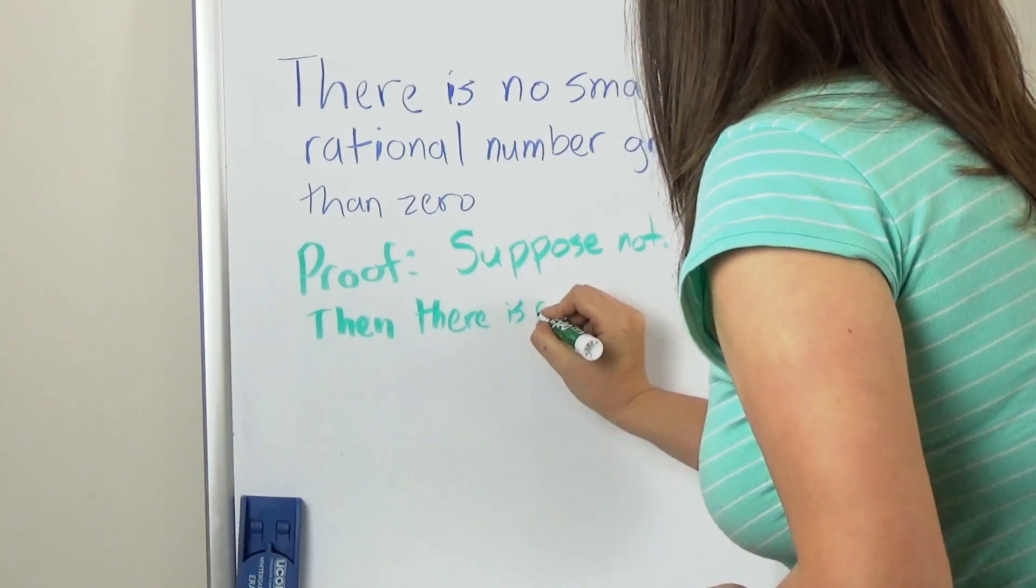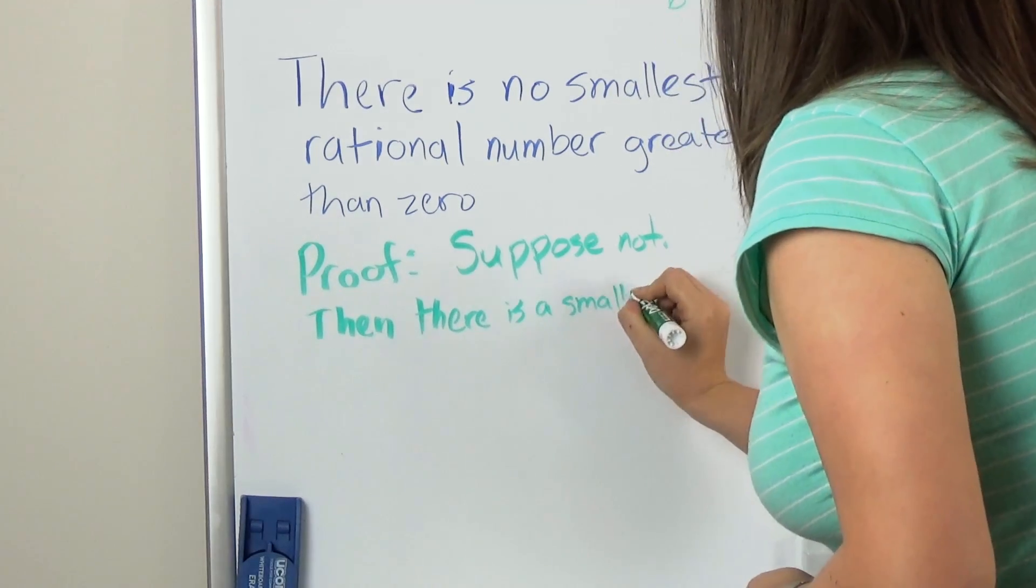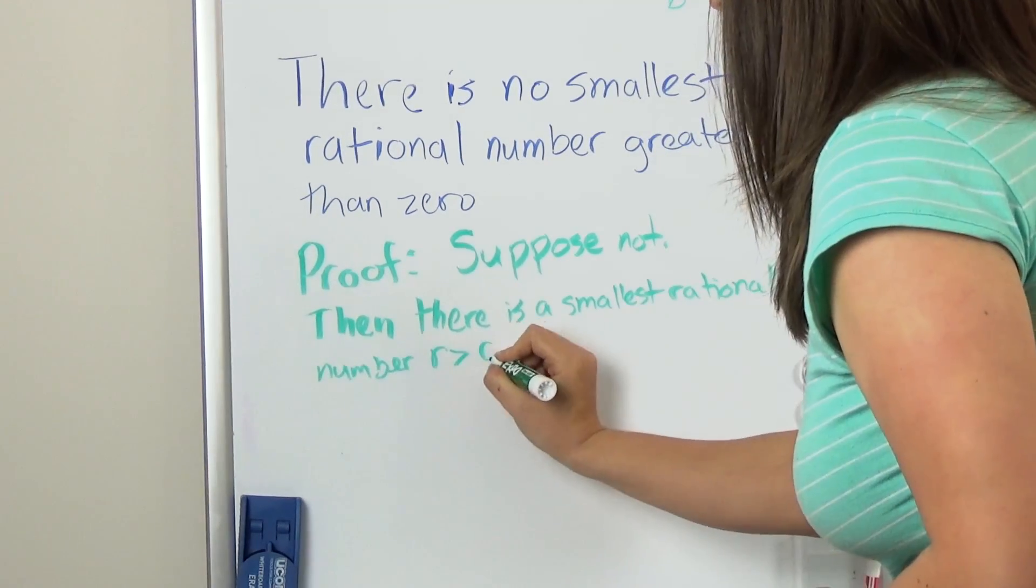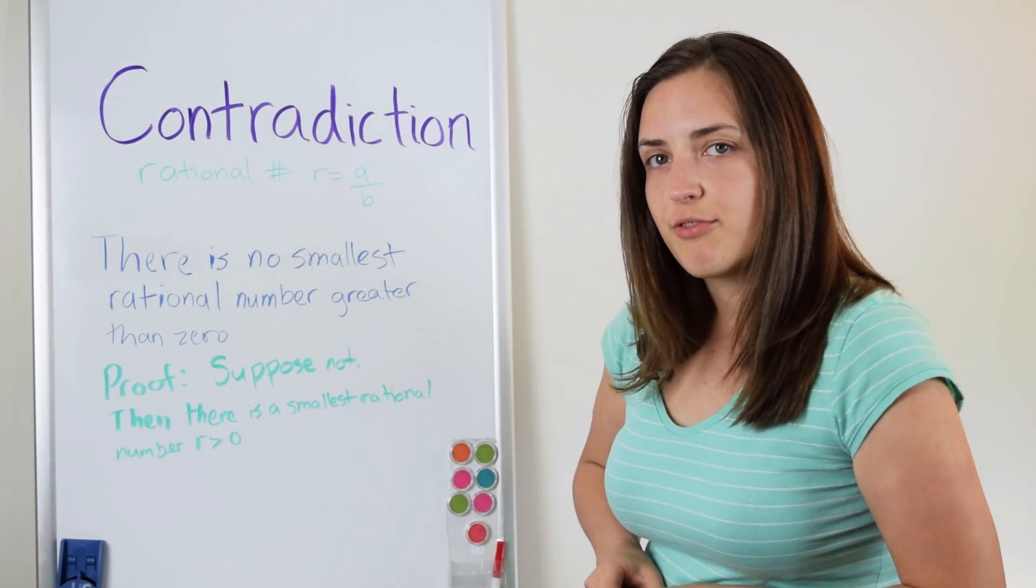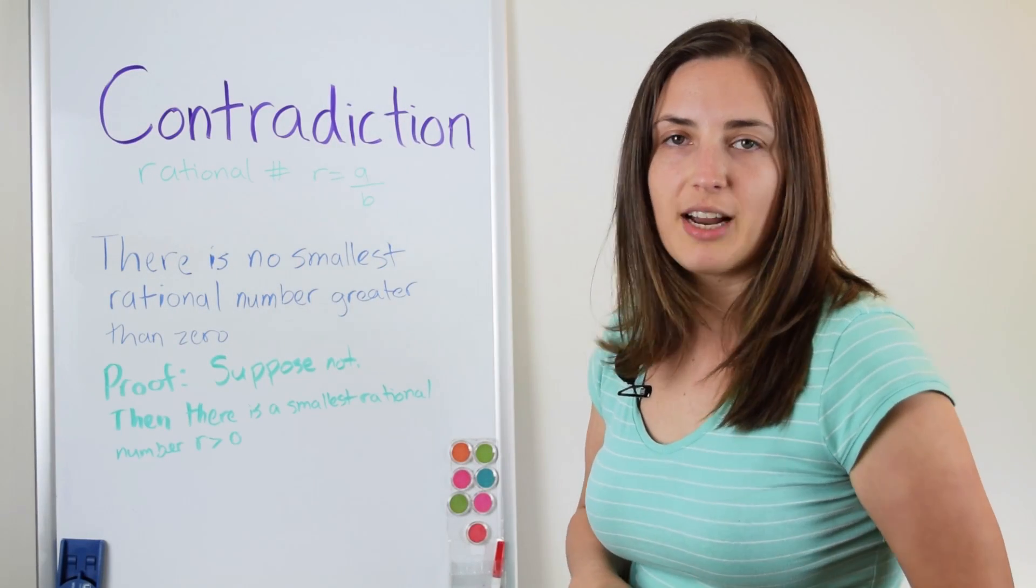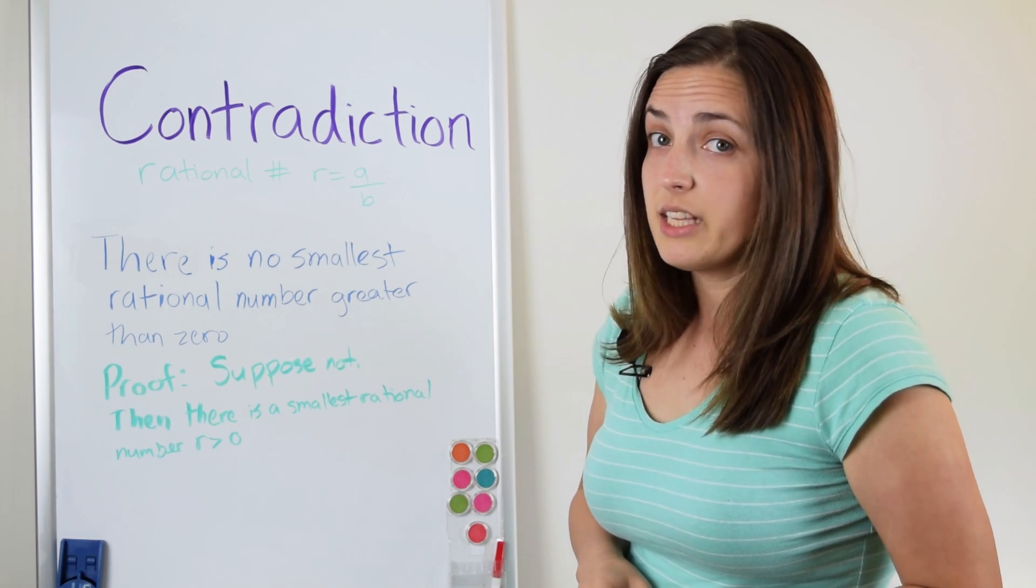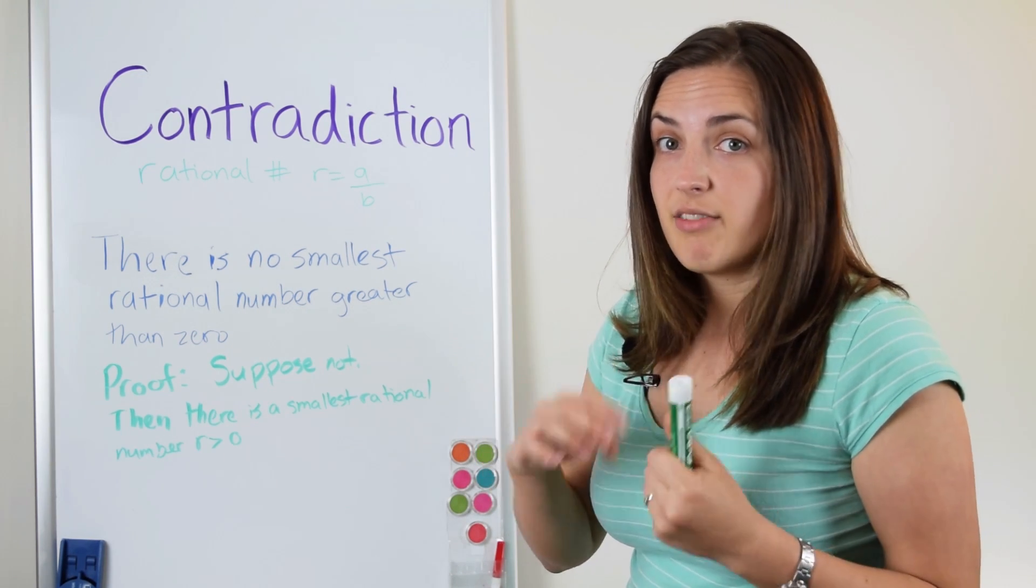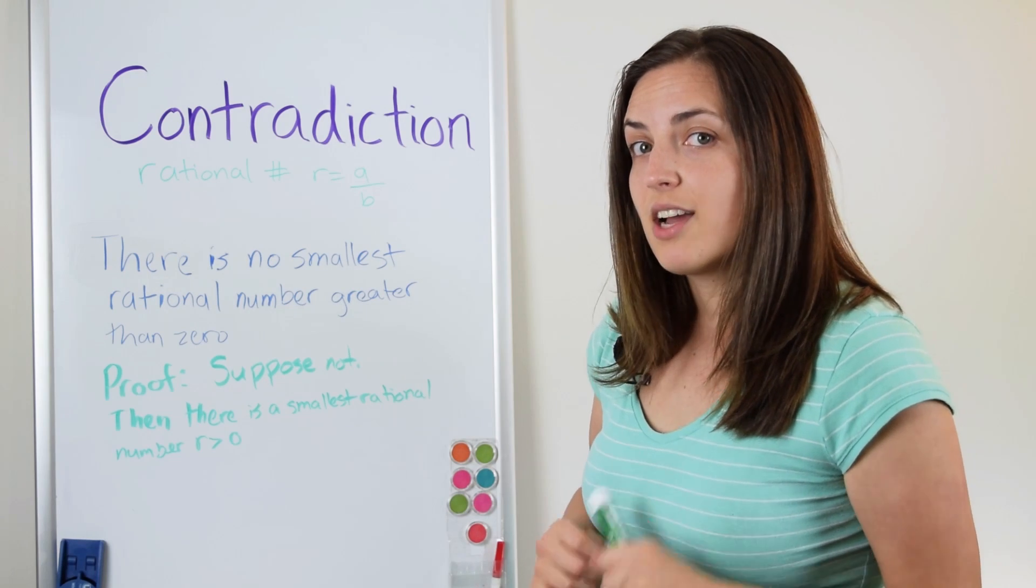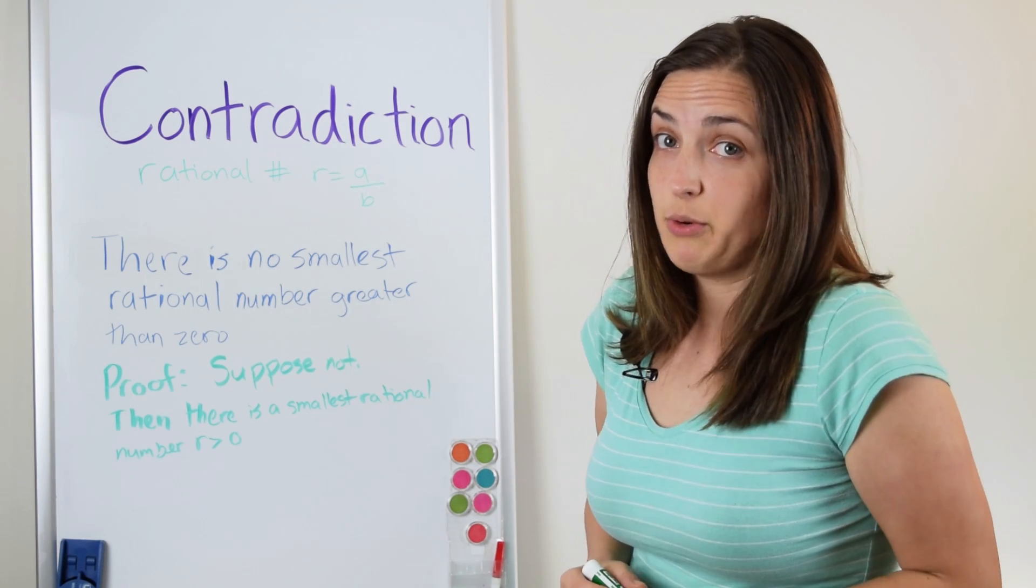Fair enough. So now we have our smallest rational number. But what can we do with this rational number? It's a fraction, it's some a divided by some b. Why don't we take r and divide it by 2? Let's see what happens.